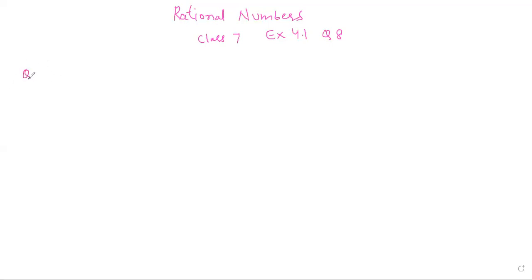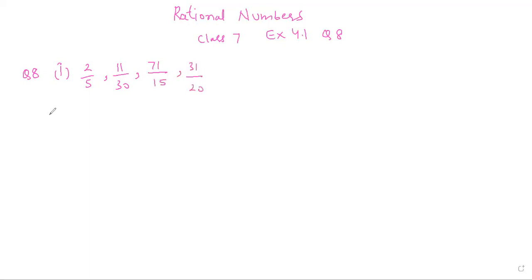So let's not waste further time — let's check out how to solve Question Number 8 of Exercise 4.1, Rational Numbers chapter of Class 7, publication house Goyal Brothers. In Question Number 8 we have been asked to arrange the given rational numbers in descending order. Descending order means first write down the largest rational number, then smaller and smaller, down to the smallest. The first part is given as: 2/5, 11/30, 71/15, and 31/20. For that we have to equate the denominators, so we will take the LCM of all the denominators.